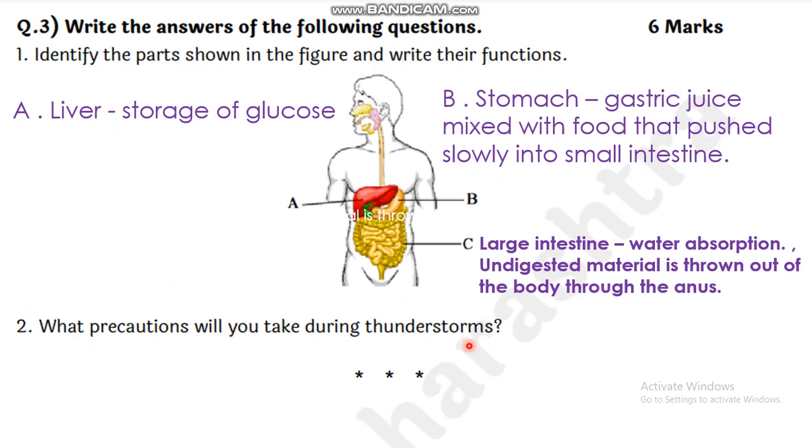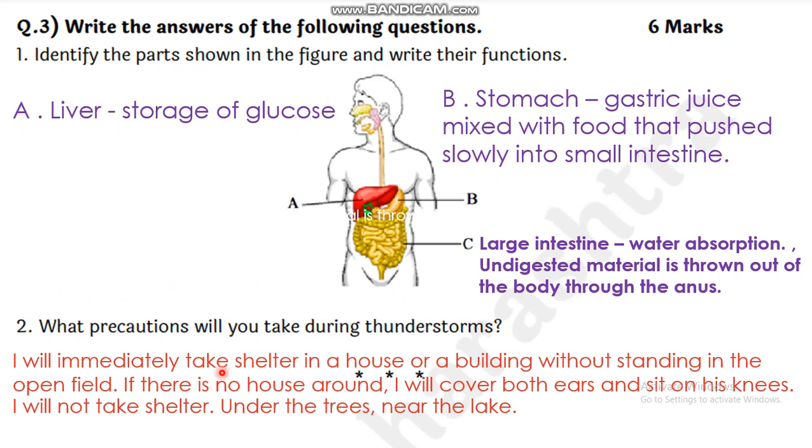Last question: What precautions will you take during thunderstorms? I will immediately take shelter in a house or a building without standing in the open field. Don't stand in the open field. Immediately take shelter in a house. If there is no house around you, I will cover both my ears and sit on my knees. I will not take shelter under the trees or near the lake. These are the dangerous things while in thunderstorms.